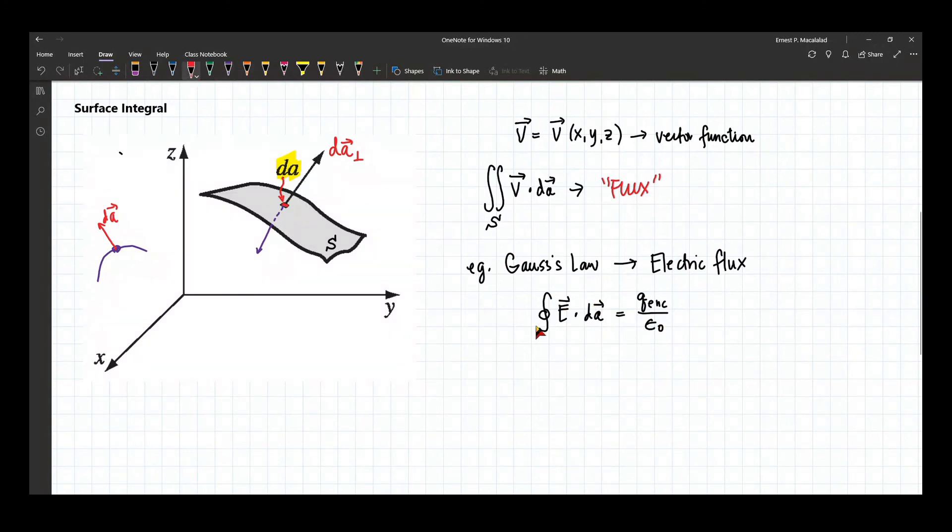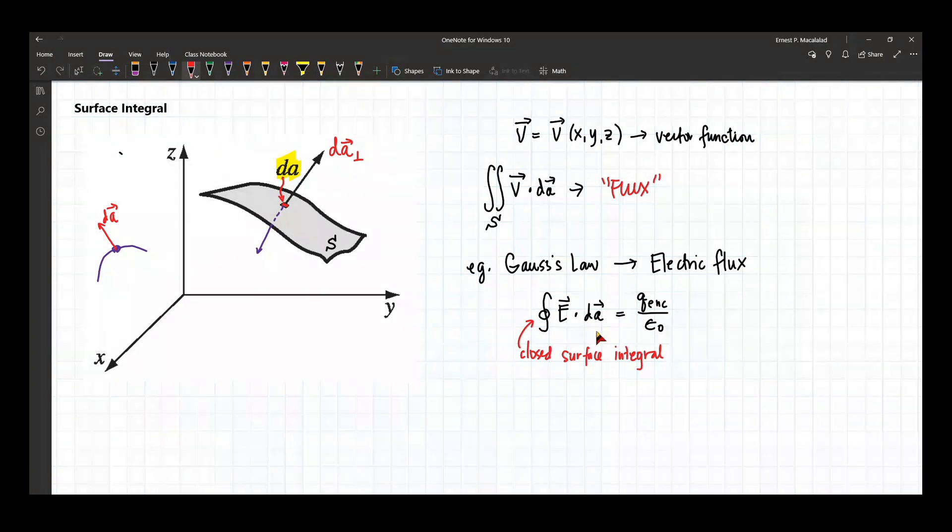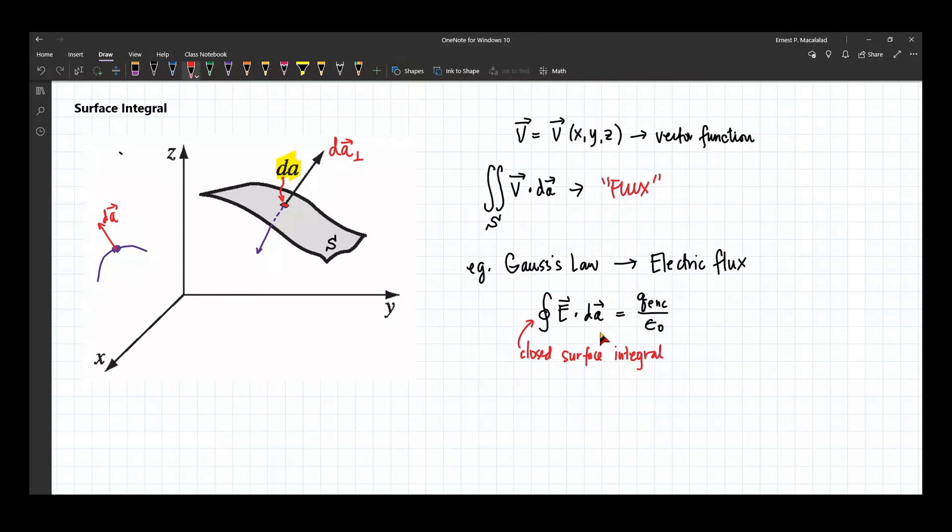So this is what we call a closed surface integral. So we are integrating this integral, the surface that we're talking about when we see this symbol is that the surface integral is done over a closed surface. And if this is non-zero, that means that closed surface, we call the closed surface the Gaussian surface, we are sure that inside that Gaussian surface, there is a net charge enclosed by the Gaussian surface. So that's Gauss's law.